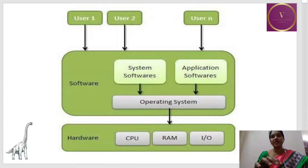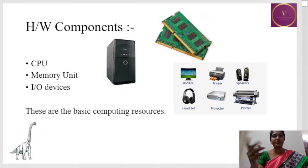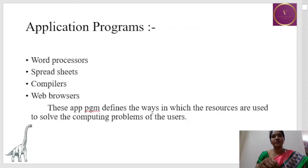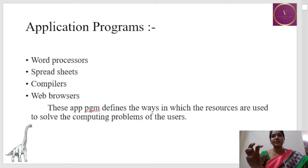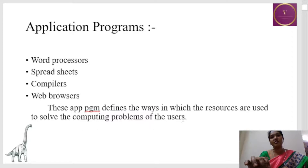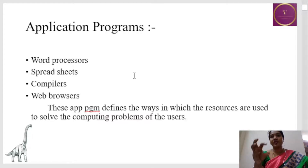Now let's see the hardware components. The components are basically the CPU — central processing unit — memory unit, and I/O devices. These are the basic computer resources. Application programs — word processors, spreadsheets, web browsers — define the way in which resources are used to solve the computing problems of the users. These are basically required for the user in order to perform their job.